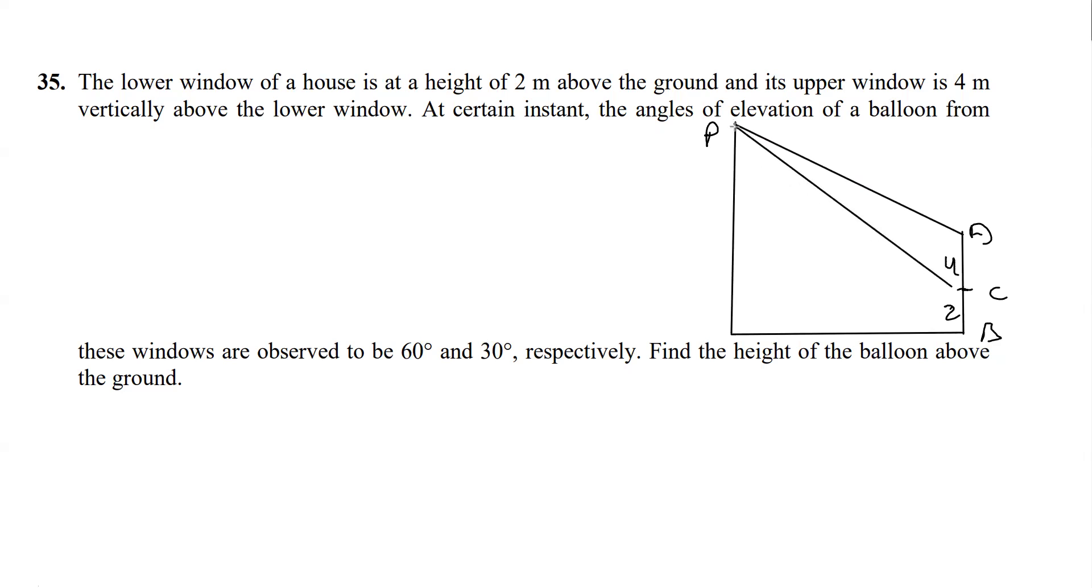I will be joining this point with window A and the other with window C. From the figure it is clear that this angle is going to be the bigger one, that is 60 degrees, and this is 30 degrees. I am taking this as M and N. Using properties, these are equal, so I can write this to be 4 and this is 2. This is missing, so I took it as H. Now there are two right angle triangles.